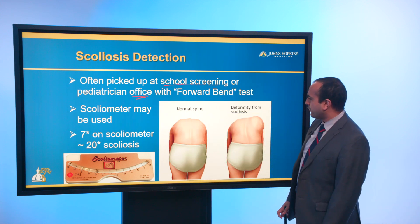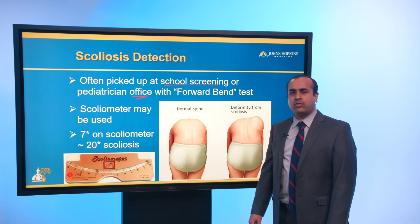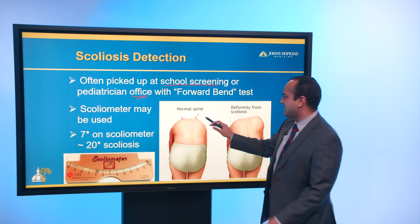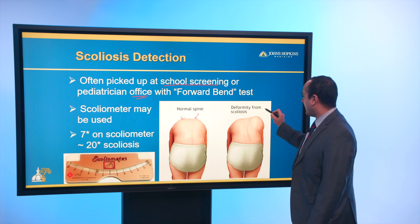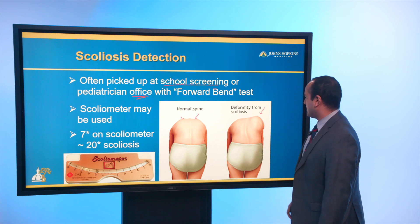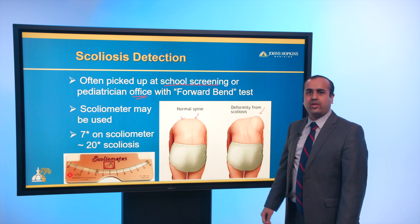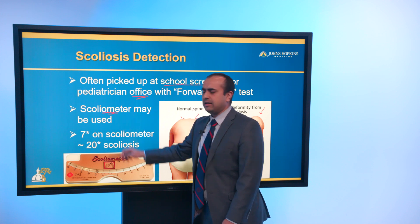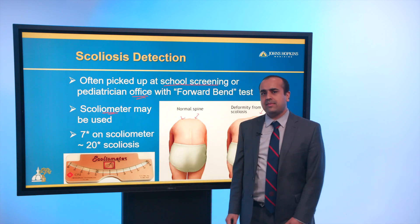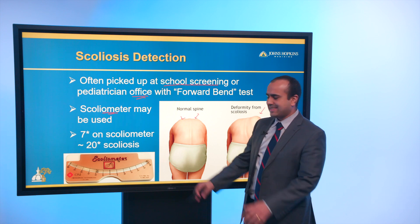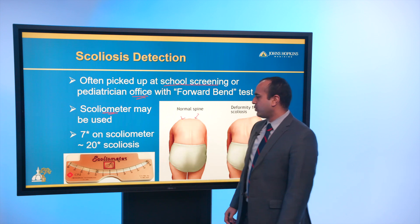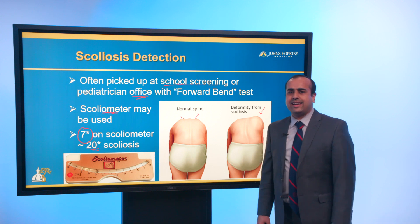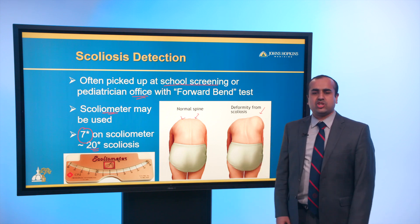The forward bend test is fairly straightforward — you ask the child to bend forward and try to touch their toes. A normal spine looks nicely balanced with little rotation. A scoliotic spine shows a right thoracic curve pushing the ribcage higher on one side. A scoliometer may be used — it's available at many pediatricians' offices, but even without it, you can still assess rotation on forward bend. The rule of thumb is that seven degrees on the scoliometer corresponds to a 20-degree scoliosis, though that can vary with body habitus.